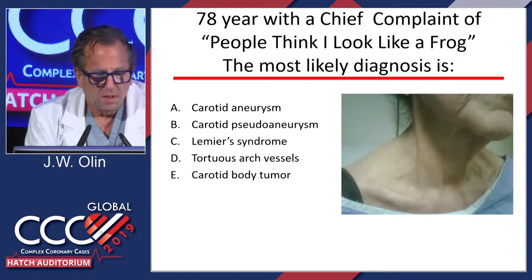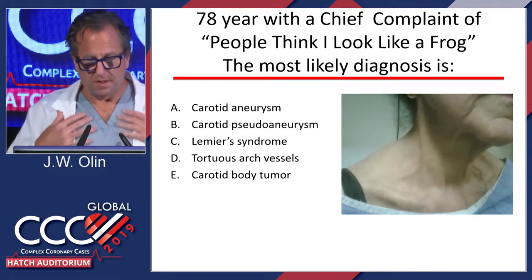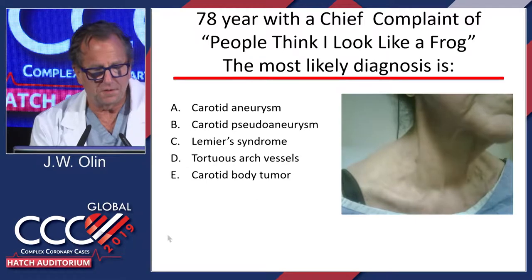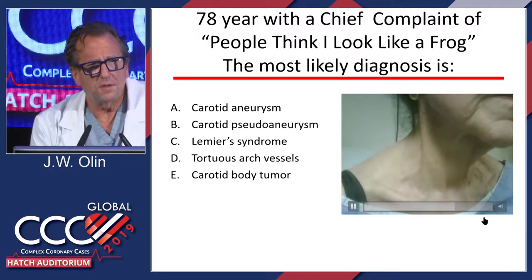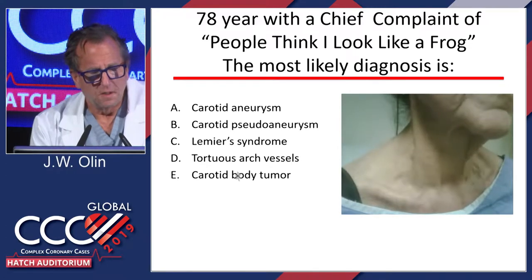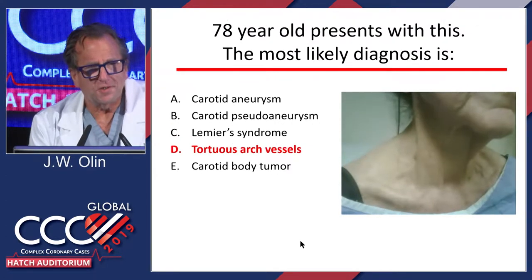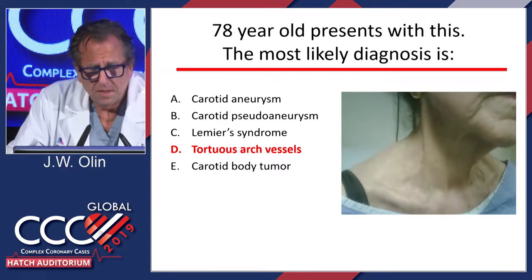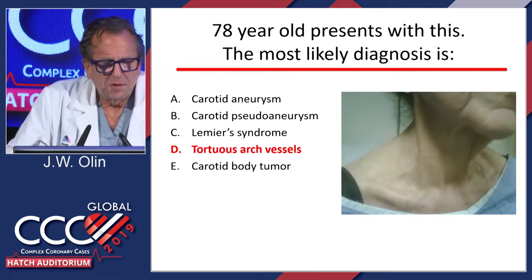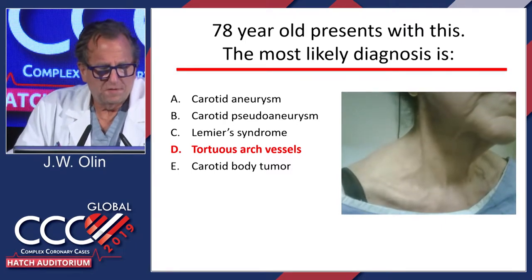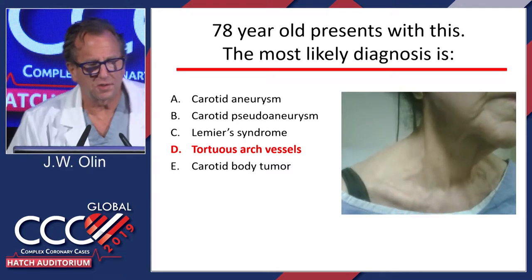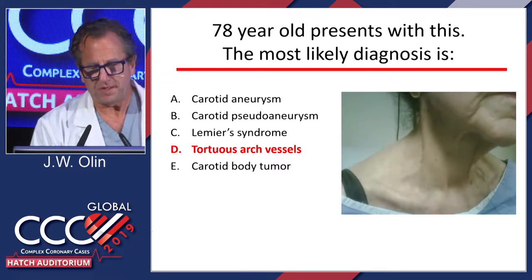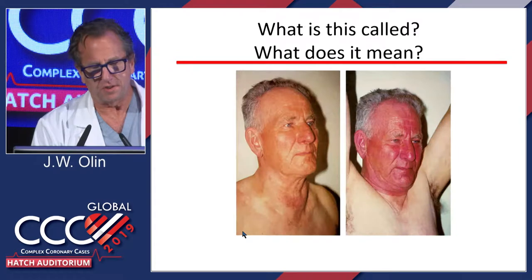This patient comes in, and her chief complaint was, 'I look like a frog.' This is really characteristic of tortuous arch vessels, which would have an implication for you guys. Lemierre's syndrome is septic thrombophlebitis of the internal jugular vein. Carotid body tumors don't look like this. You rarely even need to get imaging, but to prove to the patient that it's really just the tortuous vessel, imaging is fine.